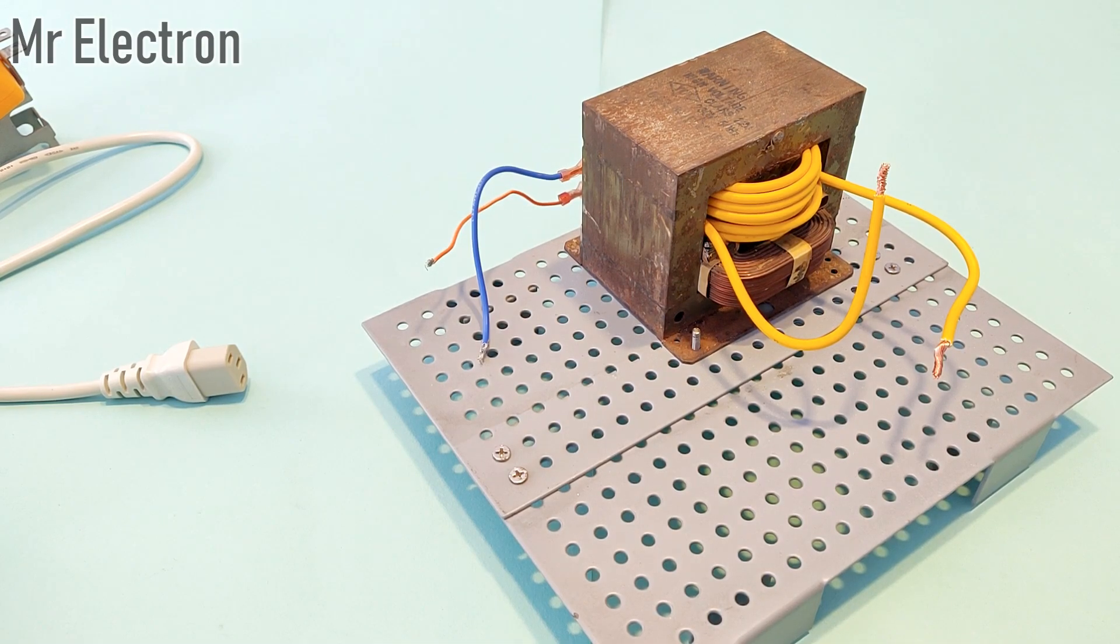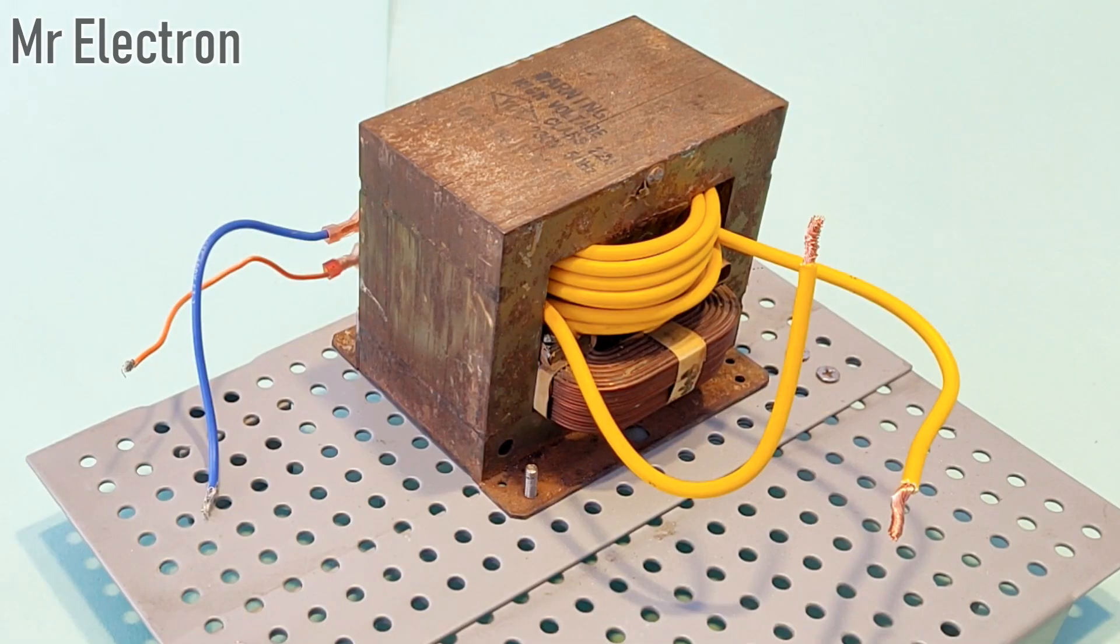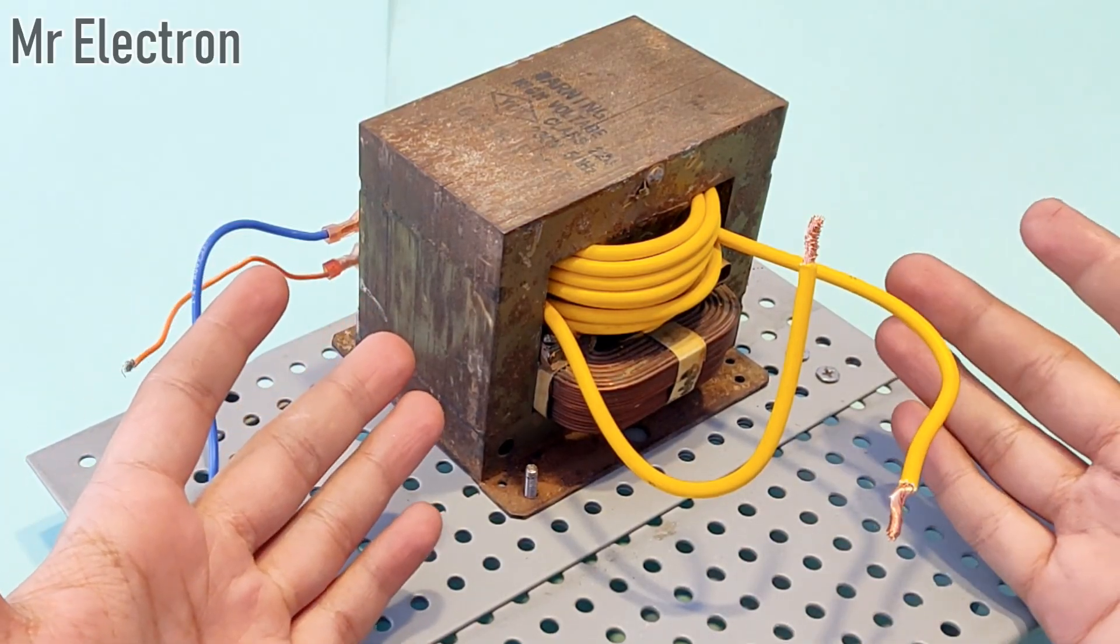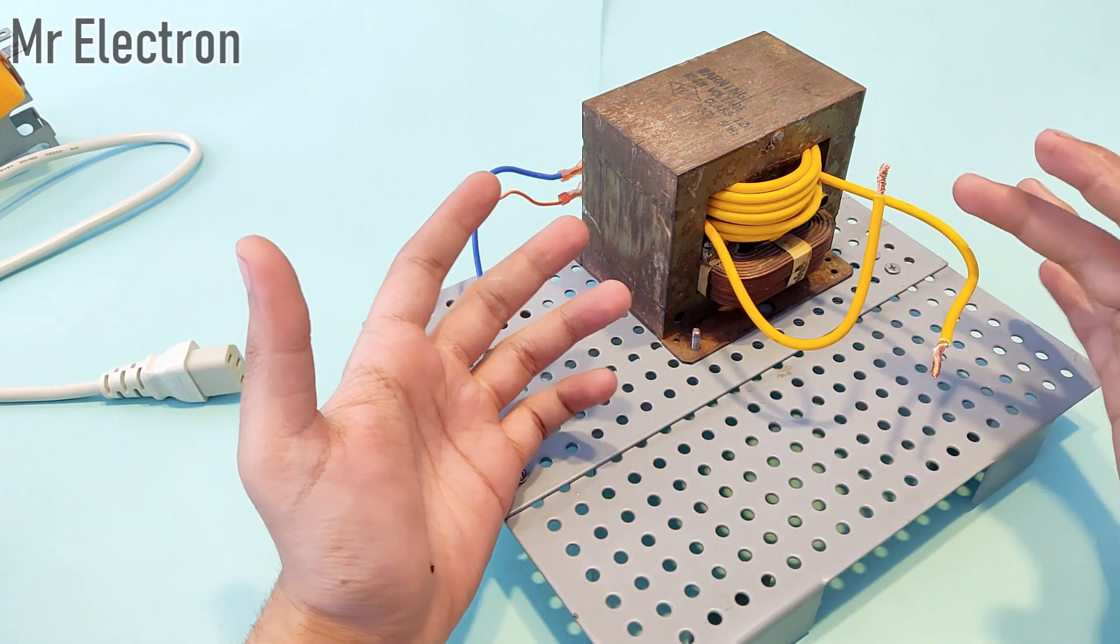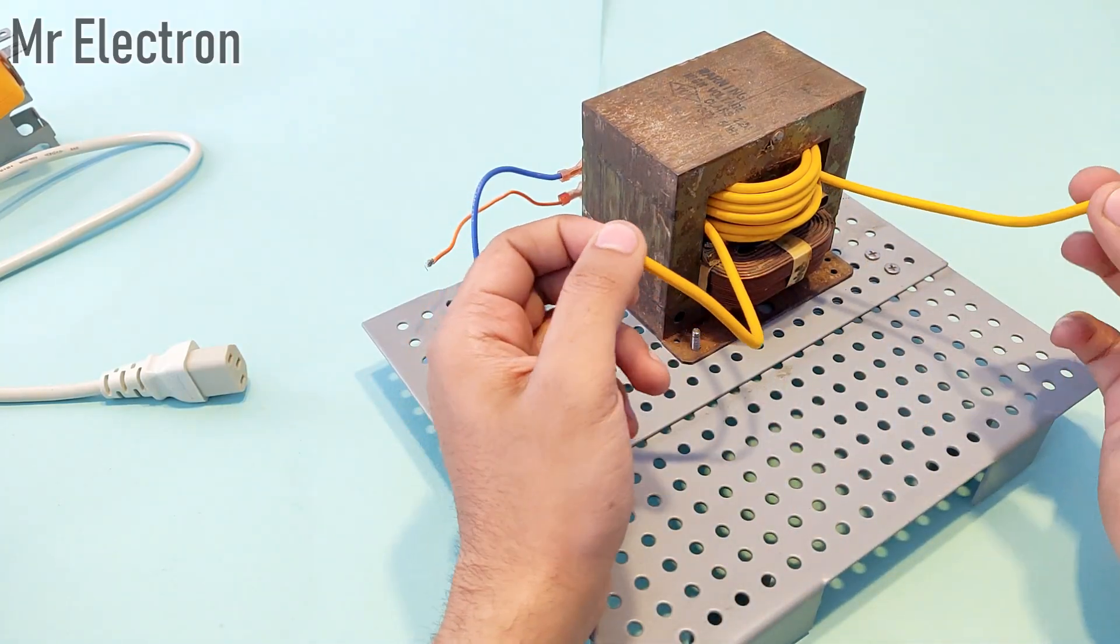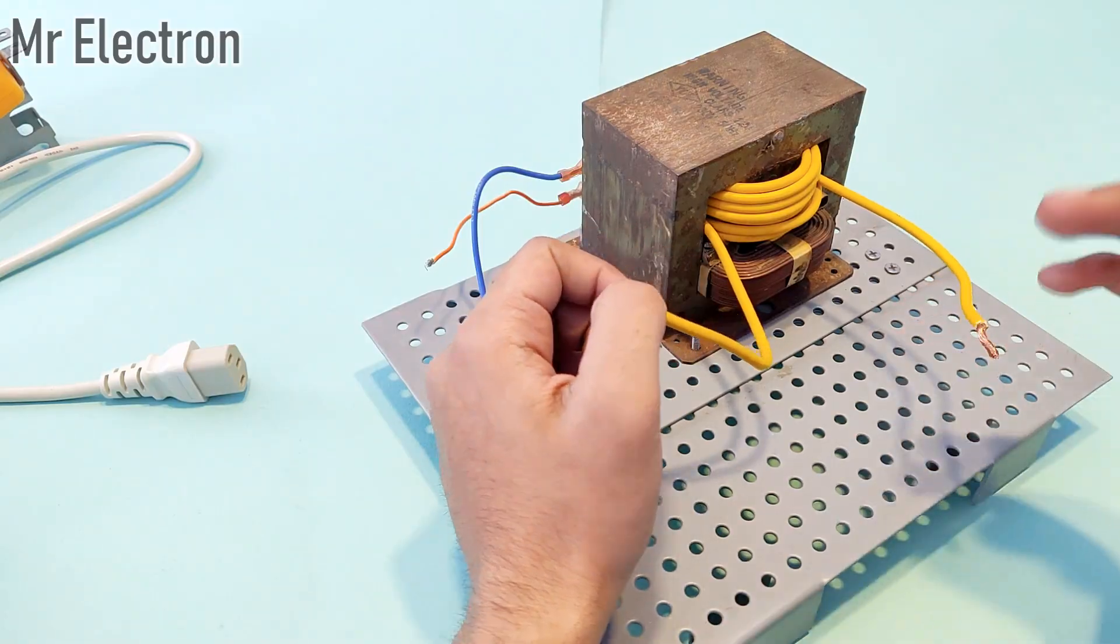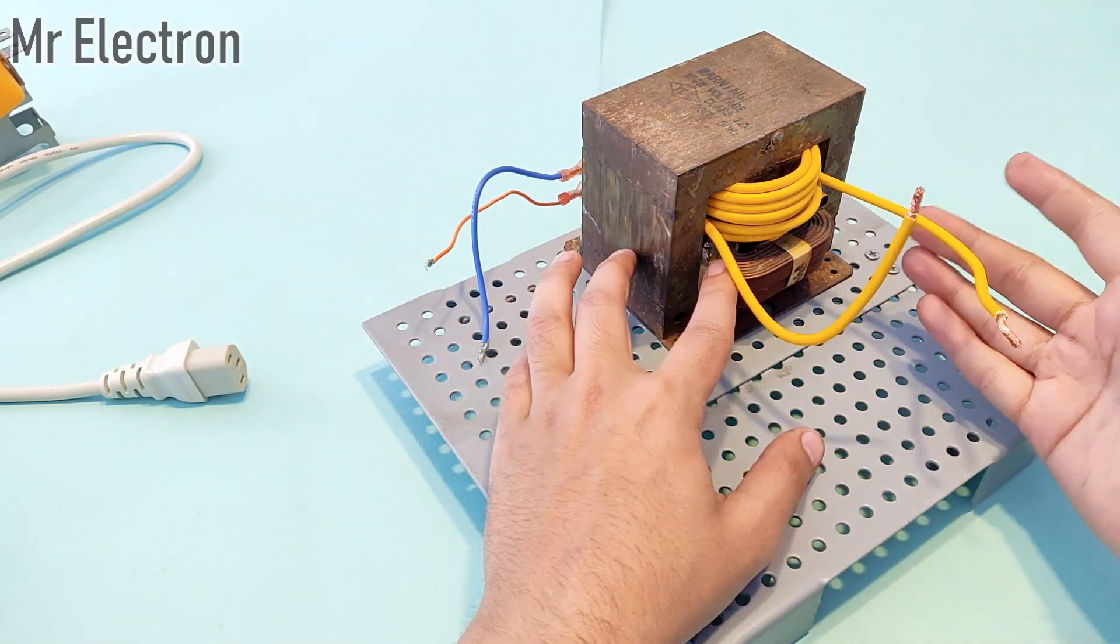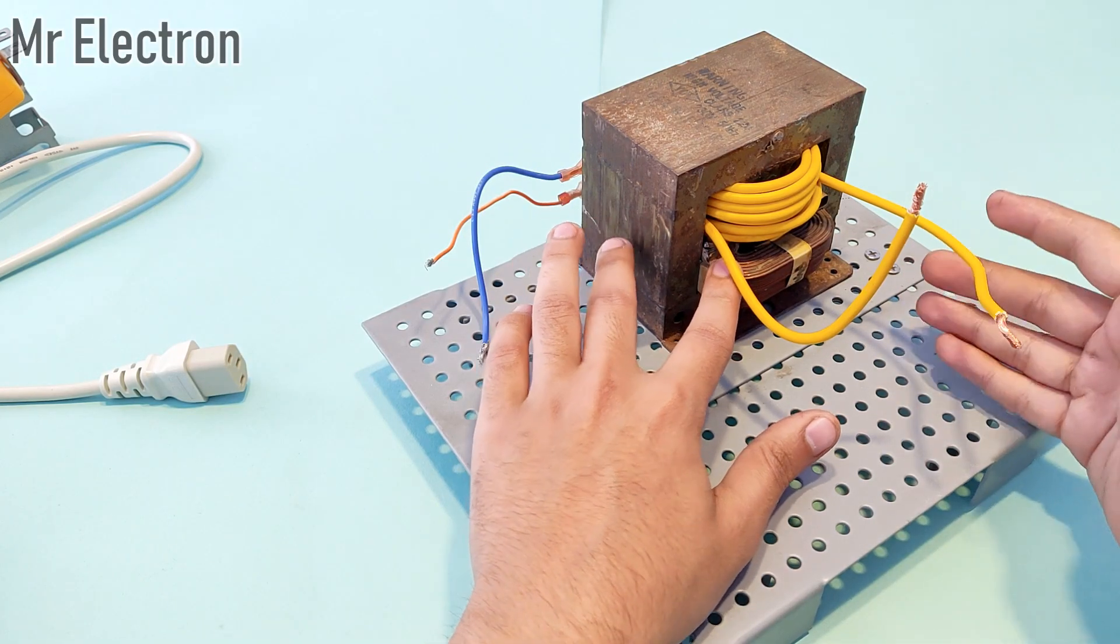Hi guys, many of you might have seen the video in which I modified this microwave transformer by removing its high voltage secondary and replacing it with this thick wire so that I can get around 12 volts DC supply for charging 12 volt batteries and running 12 volt DC motors. In my previous video, I shared